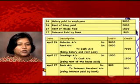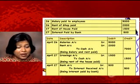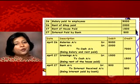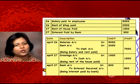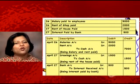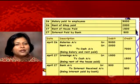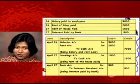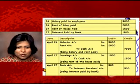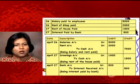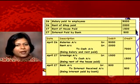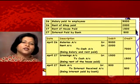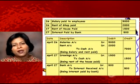Also on 27th April, interest was paid by the bank — meaning the bank paid us interest, which is our income. The rule for nominal accounts states: debit all expenditures and losses, credit all incomes and gains. Interest being our income will be credited. The bank is paying the interest, so Bank Account is debited. Journal entry: Bank Account debit to Interest Received Account, ₹500. Narration: being interest paid by bank.